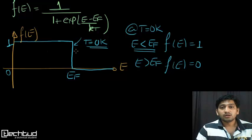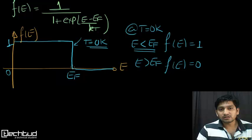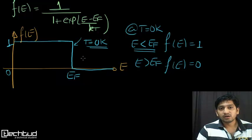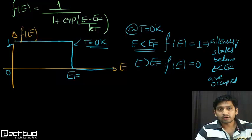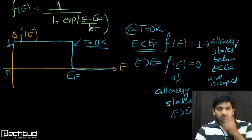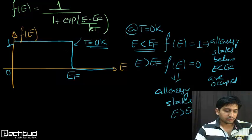The plot shows a step function: F(E) is 1 below EF and 0 above EF. This means all energy states below EF are occupied by electrons and all energy states above EF are vacant at T equal to 0 Kelvin. This is the Fermi-Dirac distribution function at absolute zero.